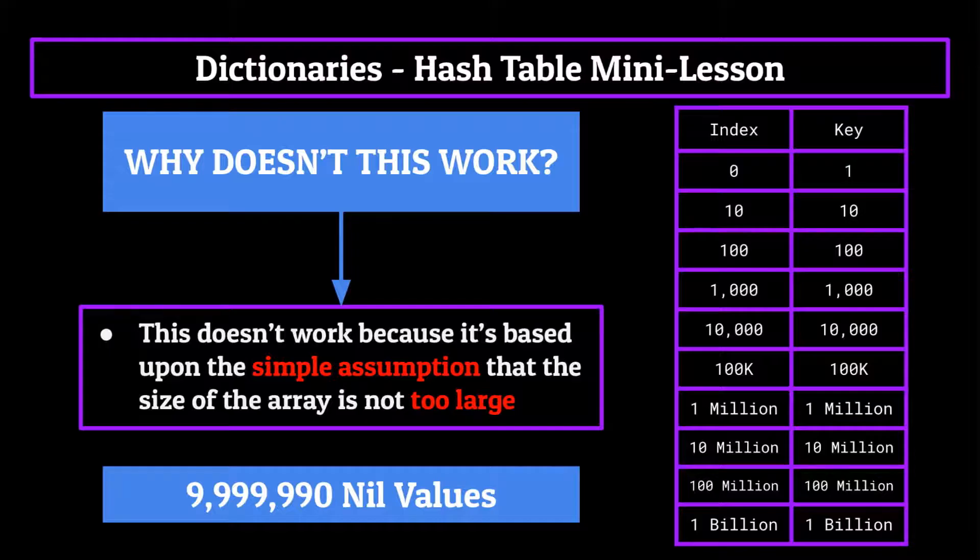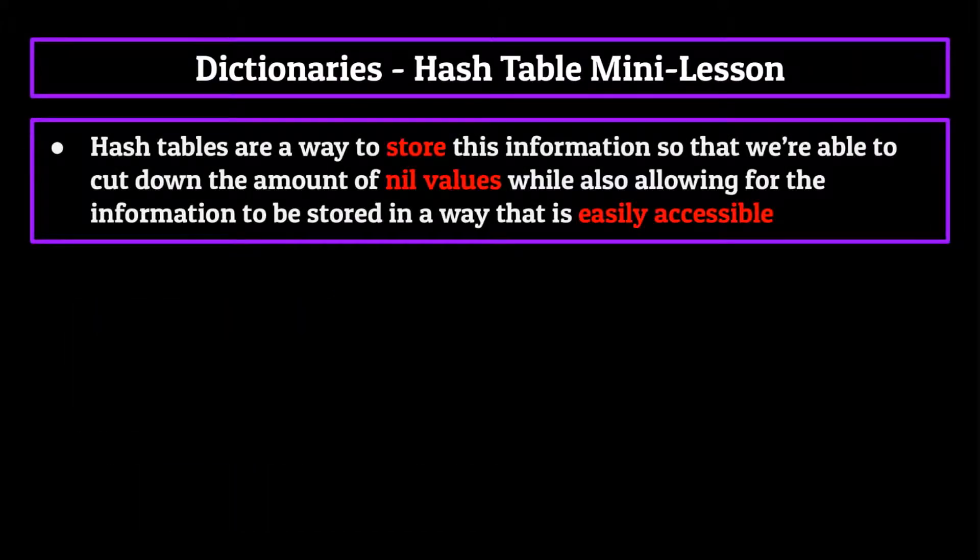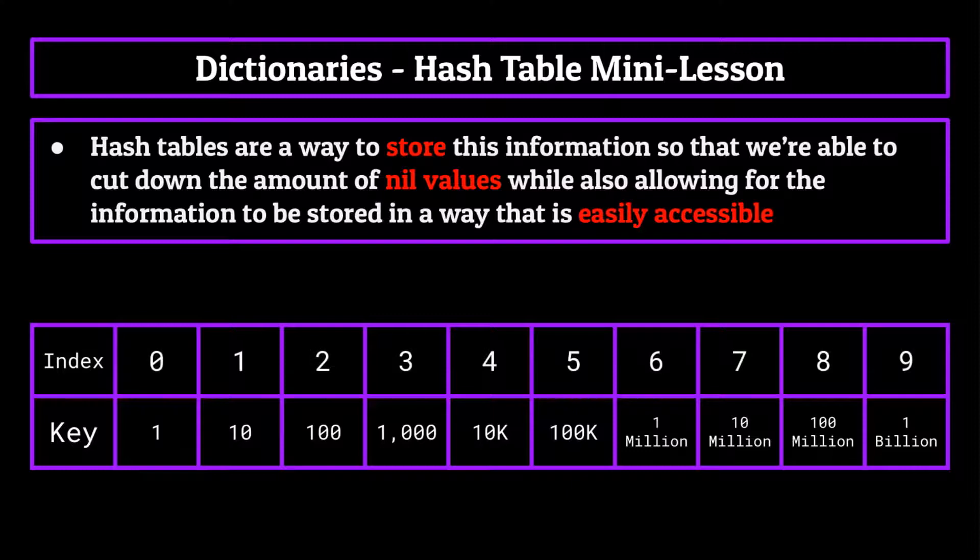So what's the answer? Well, this is where hash tables come in. Hash tables are fundamentally a way to store this information so that we're able to cut down on the amount of nil values, while also allowing for the information to be stored in such a way that it is easily accessible. Basically, using a hash table, we'd be able to store these 10 keys in our dictionary, which are ranged from one to a billion, in a table with only 10 elements while also being able to keep constant time. How do we do this? Well, through the use of a trick programmers use known as hash functions.